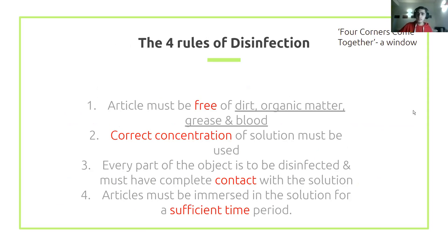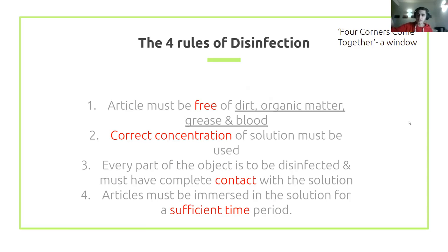There are four key criteria for disinfection. First, the article must be free of dirt, organic matter, grease, and blood. Second, you must use the correct concentration of the disinfecting chemical. Third, the object must be completely in contact with the solution. Fourth, it must be immersed for sufficient time to kill everything. A helpful acronym: four corners come together — Free of things, Correct concentration, Contact, Sufficient time.